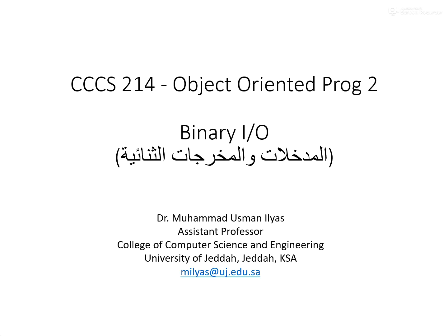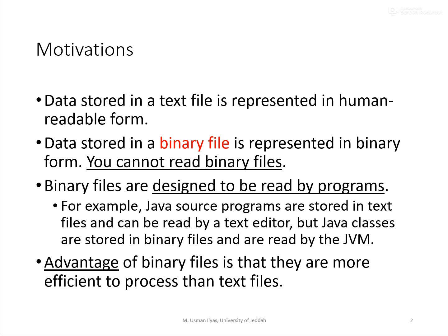Hello everyone and welcome back to CCCS 214, Object Oriented Programming 2. Today we start our chapter on binary IO. In the prerequisite course, Object Oriented Programming 1, you have already used files before, but those files were what we call text files. In this chapter we look at another type of file in which information is encoded differently, and these files are called binary files.